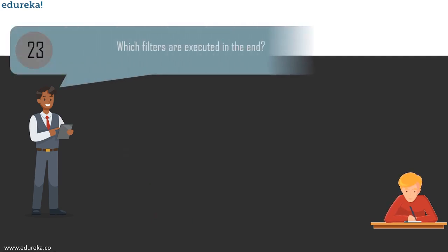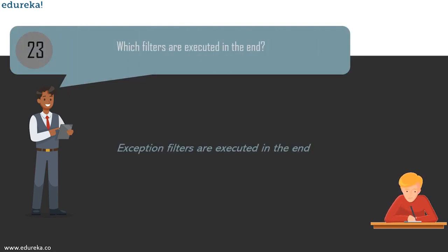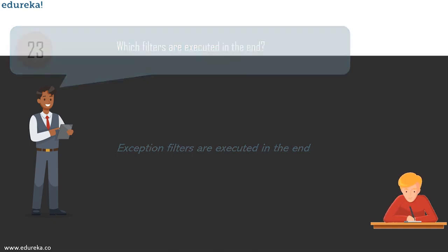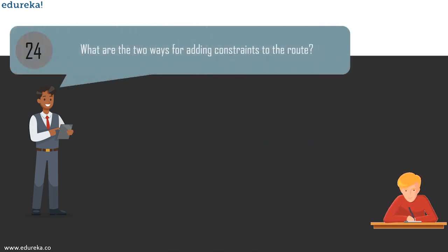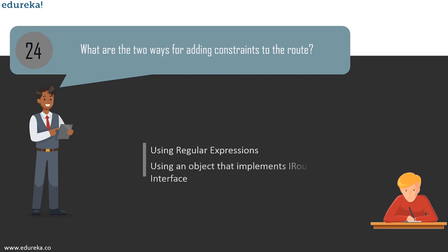The next question is: which filters are executed in the end? Exception filters are executed last. First, the authorization filter is executed, then the action filter, then the result filter, and finally the exception filter — to handle any exceptions or errors. Regarding adding constraints to a route, the two methods are: using regular expressions, and using an object that implements the IRouteConstraint interface.